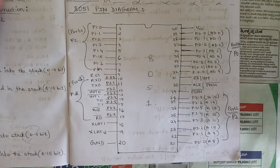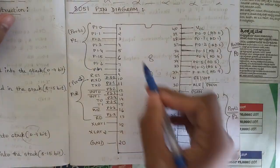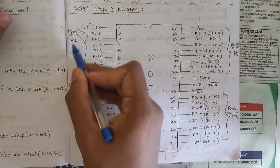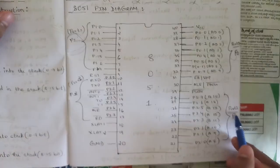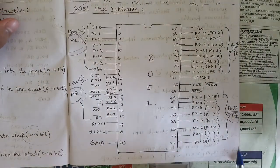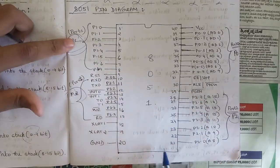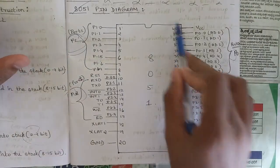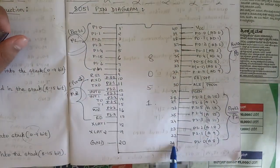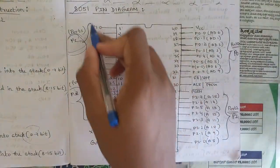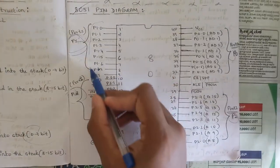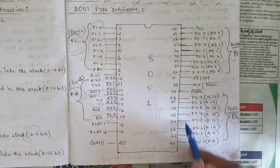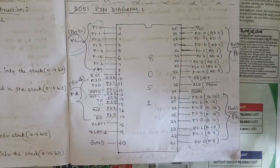Another important topic is the 8051 pin diagram. The 8051 has 40 pins divided into four ports: Port 1 (pins 1–8), Port 3 (pins 10–17), Port 0 (pins 32–40), and Port 2 (pins 21–29). Each port has 8 pins labeled port_x.0 to port_x.7 for all four ports.